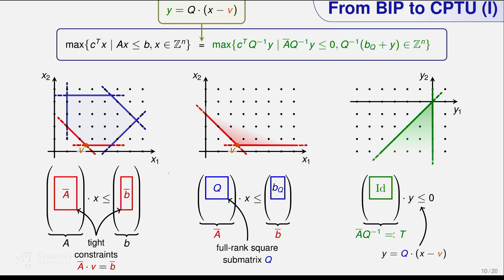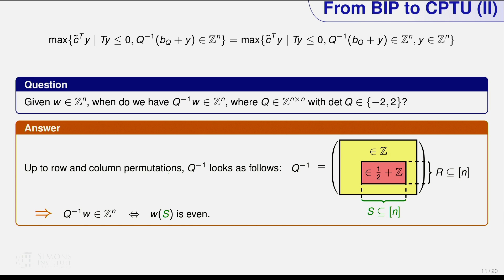We need to make sure that when optimizing over Y and transforming back to X, we get an integer point. It turns out the condition Y must satisfy is precisely a parity condition: for some subset of coordinates S, the sum of Y over S must be odd. This gives us the CPTU formulation.